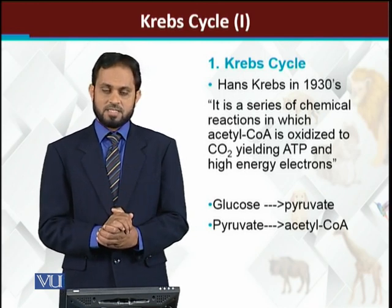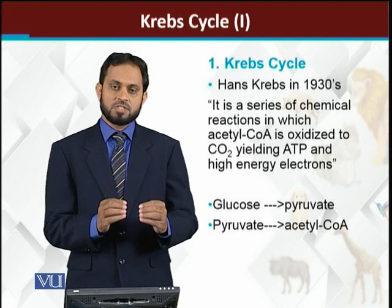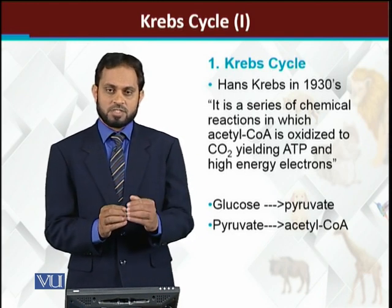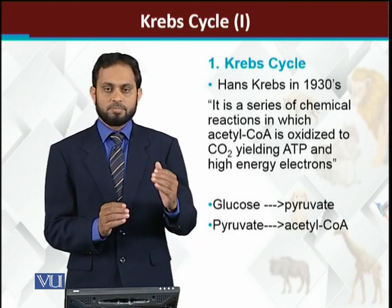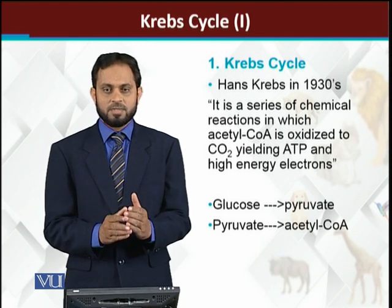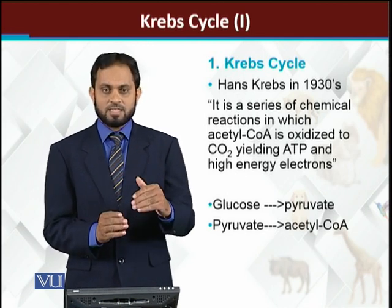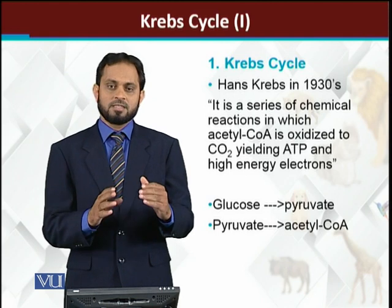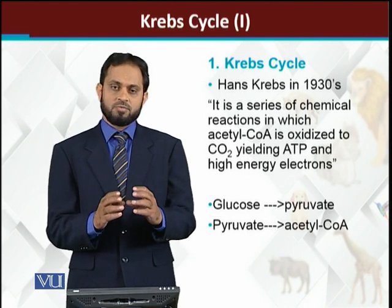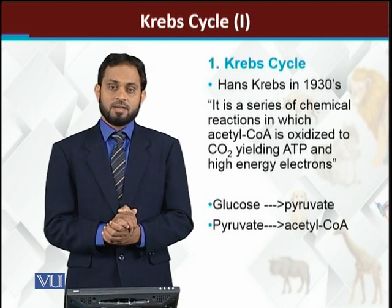Acetyl-coenzyme A is formed from pyruvate. So the sequence is: glucose → pyruvate → acetyl-coenzyme A. Acetyl-coenzyme A then enters the Krebs cycle, and all the carbon atoms are converted into carbon dioxide.